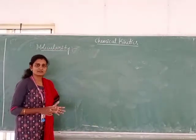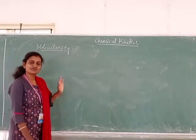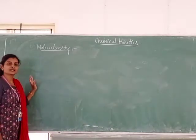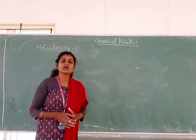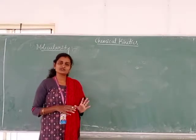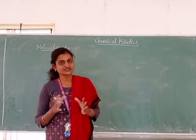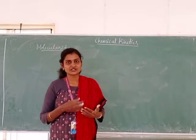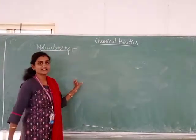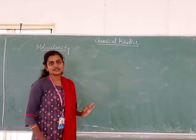Order is experimentally determined and it is the summation of the coefficients of the reactants involved in the chemical reaction. Whereas molecularity is the number of reactant molecules which are going to simultaneously collide in the chemical reaction. From collision theory, reactants have to collide properly and in the same direction, exchanging ions or sharing electrons by collision to create a new product. The number of molecules simultaneously colliding decides the molecularity of the reaction.